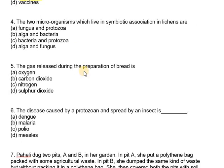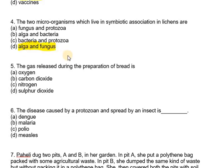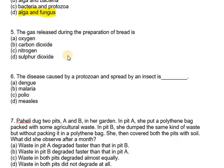Question number four says: the two microorganisms which live in symbiotic association in lichens are — fungus and protozoa, alga and bacteria, bacteria and protozoa, or alga and fungus? The answer is alga and fungus, which live in symbiotic association in lichens.